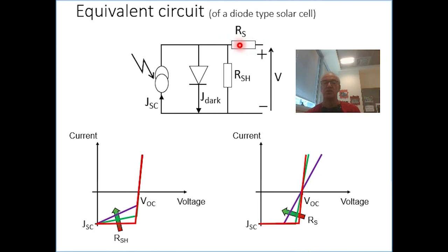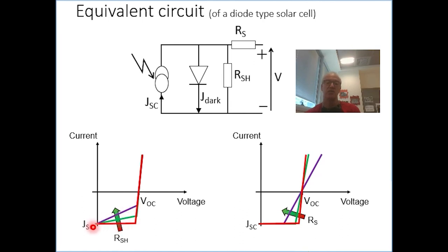But it doesn't do anything to the open circuit voltage, simply because when the circuit is open, there is no current flowing through the serial resistance, so it can't have any effect on what we measure. In a similar way, the effect of the parallel resistance disappears when we are at short circuit.